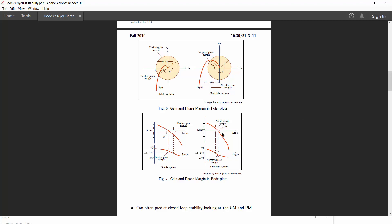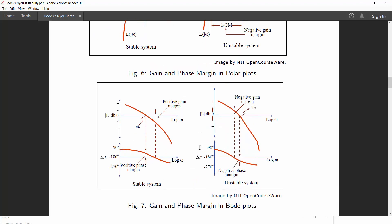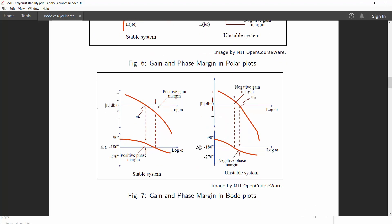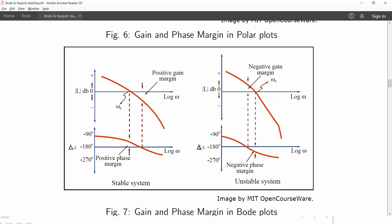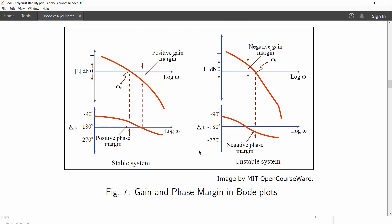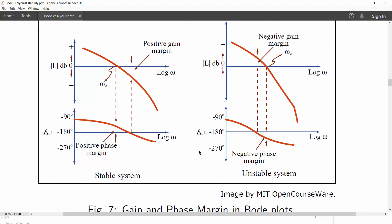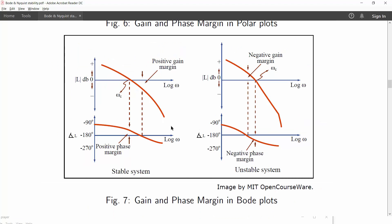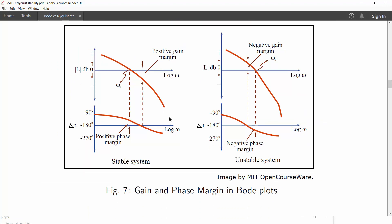In case of Bode plot, after obtaining the Bode plot in order to determine stability, we first define the gain crossover frequency and the phase crossover frequency. So if you look at the gain plot, the point on the 0 dB line where the gain plot crosses is called the gain crossover frequency.